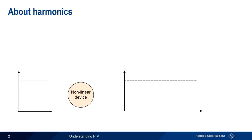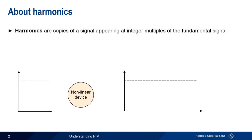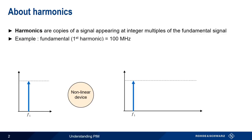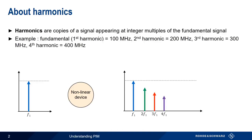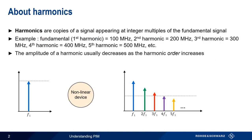To explain what passive intermodulation is, we first have to start by explaining harmonics and intermodulation products. Harmonics are copies of signals that appear at integer multiples of a fundamental frequency. For example, a signal at 100 MHz passing through a nonlinear device produces harmonics at 200 MHz, 300 MHz, 400 MHz, 500 MHz, etc. Note that the amplitude of a harmonic decreases as the harmonic order increases.